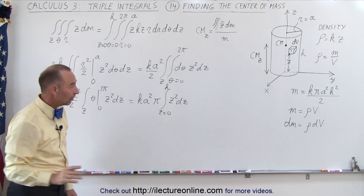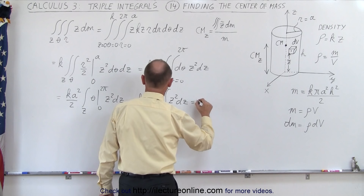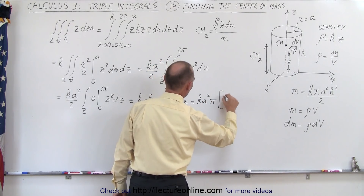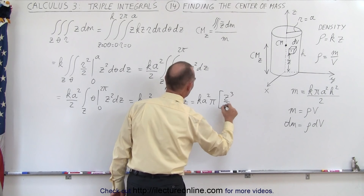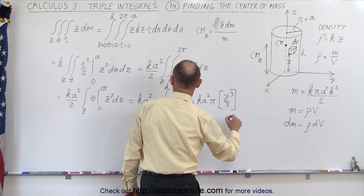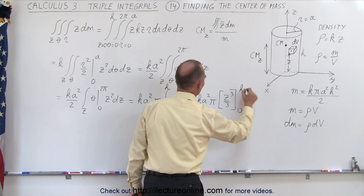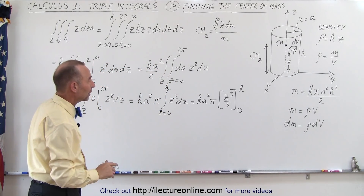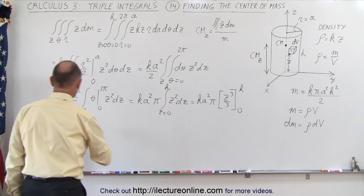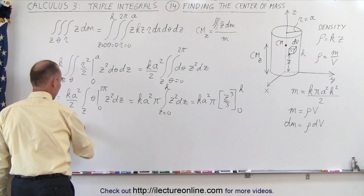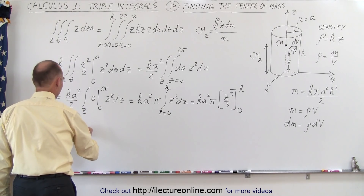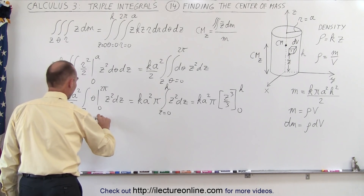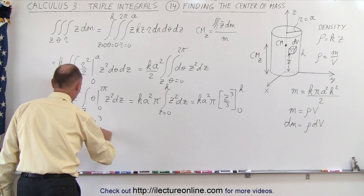Now we integrate z squared from 0 to h. That gives k a squared pi times z cubed over 3, evaluated from 0 to h. Plugging in 0 gives nothing; plugging in h gives h cubed over 3. So the numerator evaluates to k pi a squared h cubed over 3.